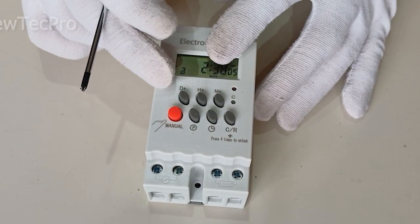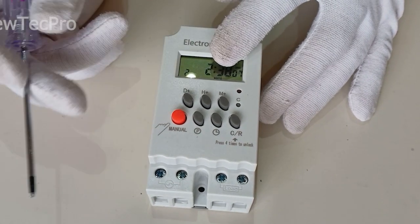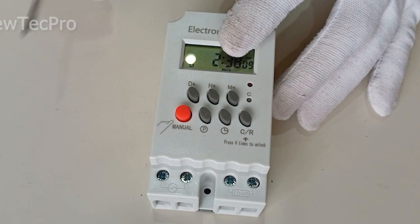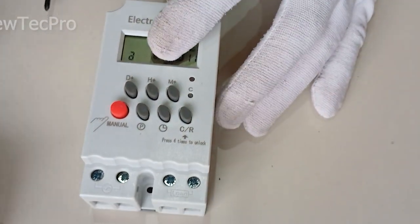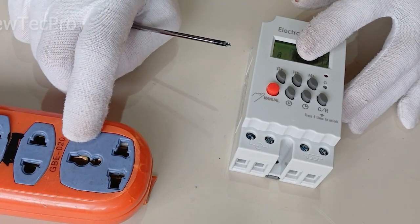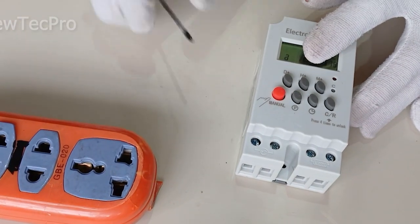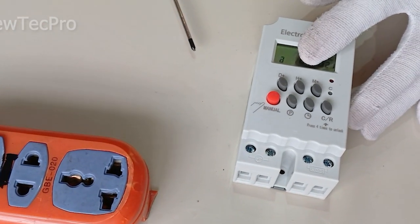This digital timer acts as an interface between the home electricity, for example this, and electrical device, for example this.